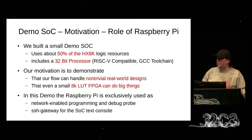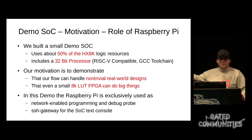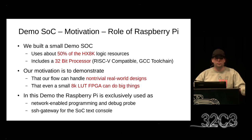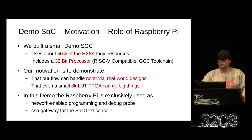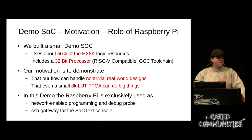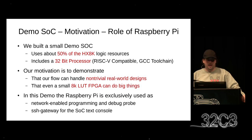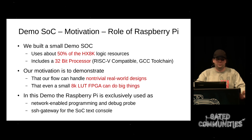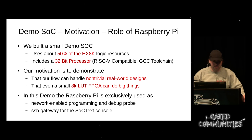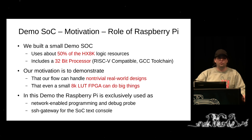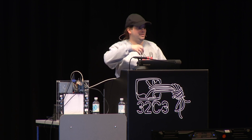I built a small demo SoC with two motivations: first, to convince you that this toolchain can be used for non-trivial designs, not just small hello-world examples; and second, to show that even with only 8,000 LUTs we can do interesting things. My demo system-on-chip uses only about 50% of the logic resources, so it could be a useful basis for other projects. It includes a fully featured 32-bit processor compatible with the RISC-V instruction set, so you can use the GCC toolchain to build programs for it. The Raspberry Pi is only used as a network-enabled debugger and console.